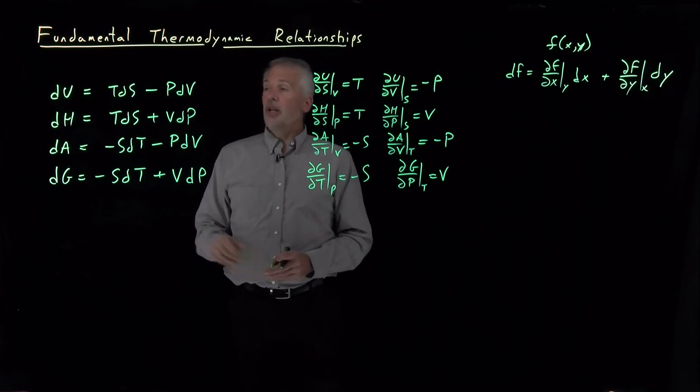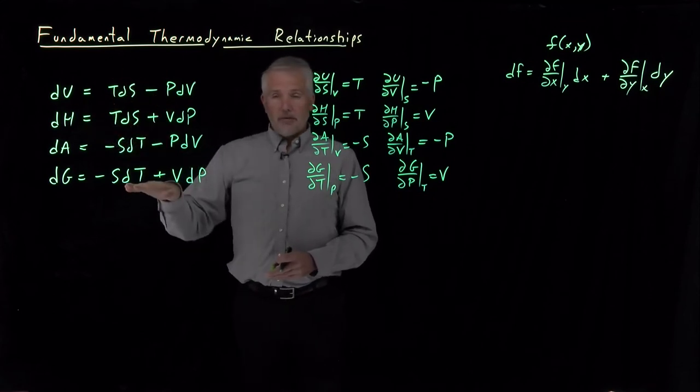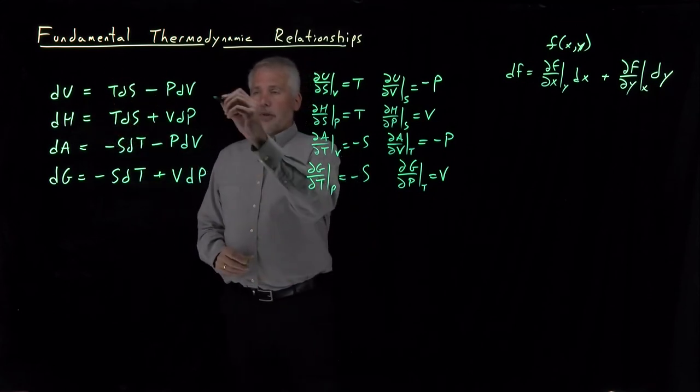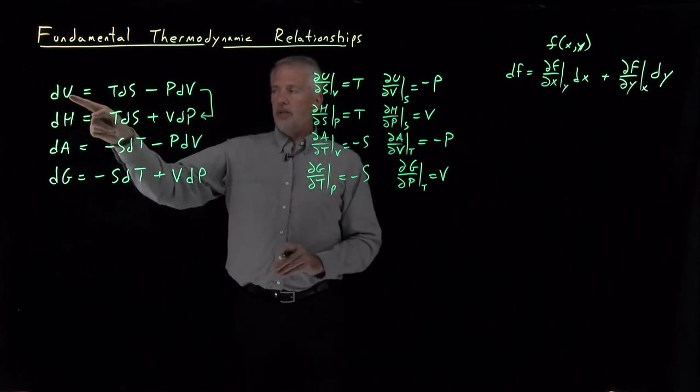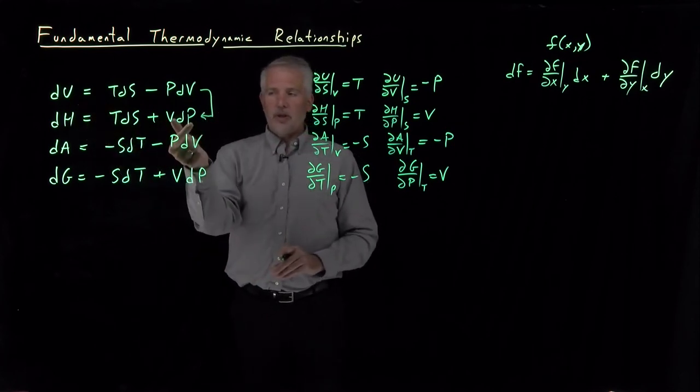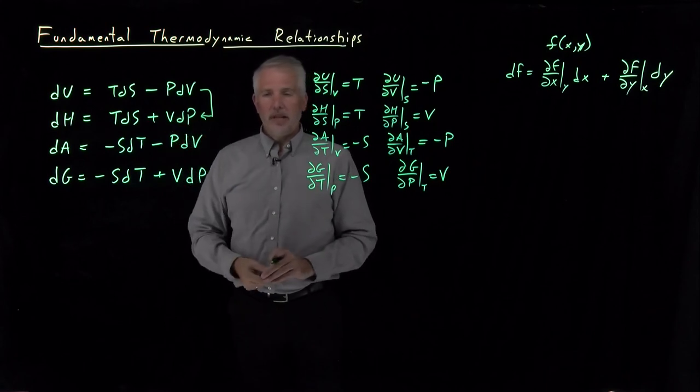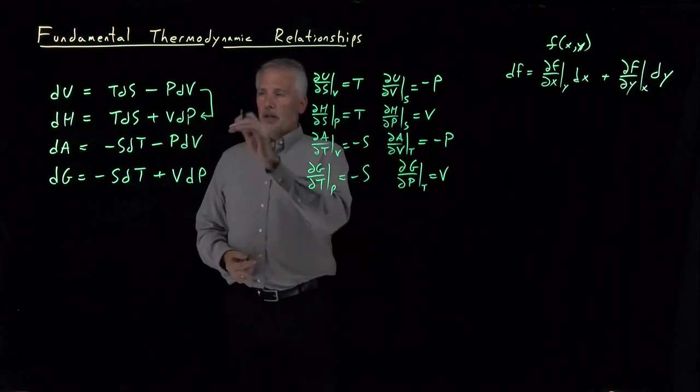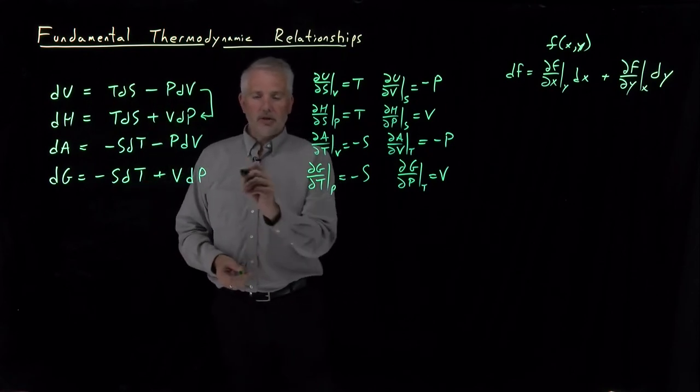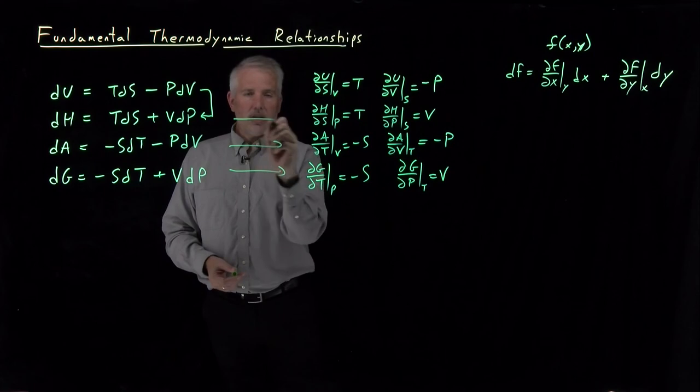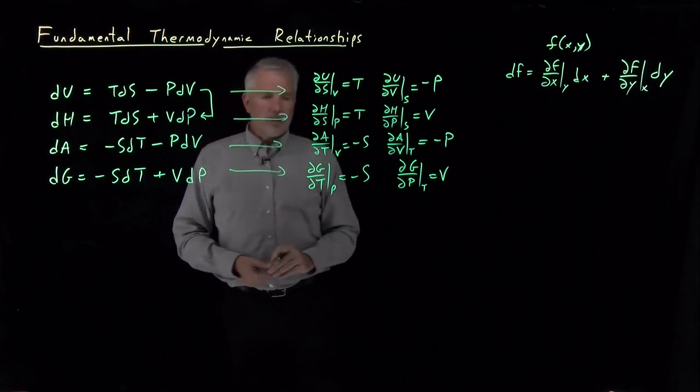Even easier than memorizing four different fundamental equations, if you remember how to get from one of these to the other. For example, enthalpy is energy plus PV, so that swaps the roles of the P and the V in the fundamental equation. Just by memorizing one of these fundamental equations, knowing how to get the others very easily, you can also very easily proceed to get these eight thermodynamic relationships.